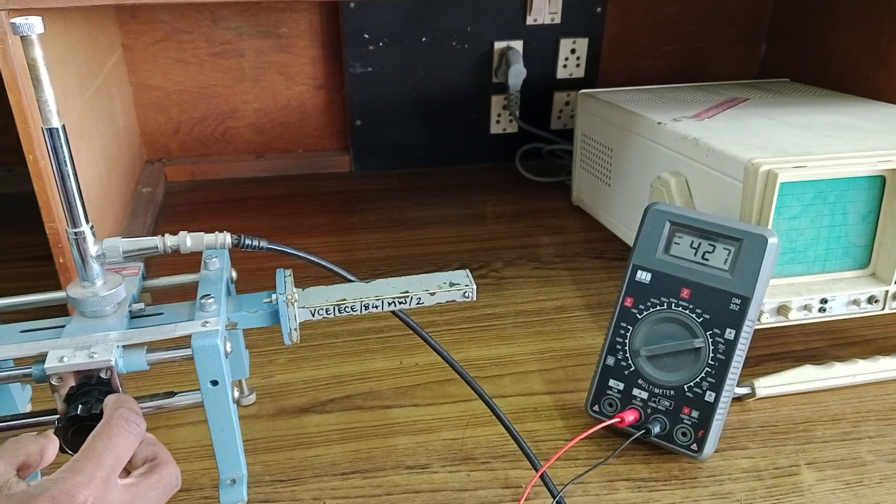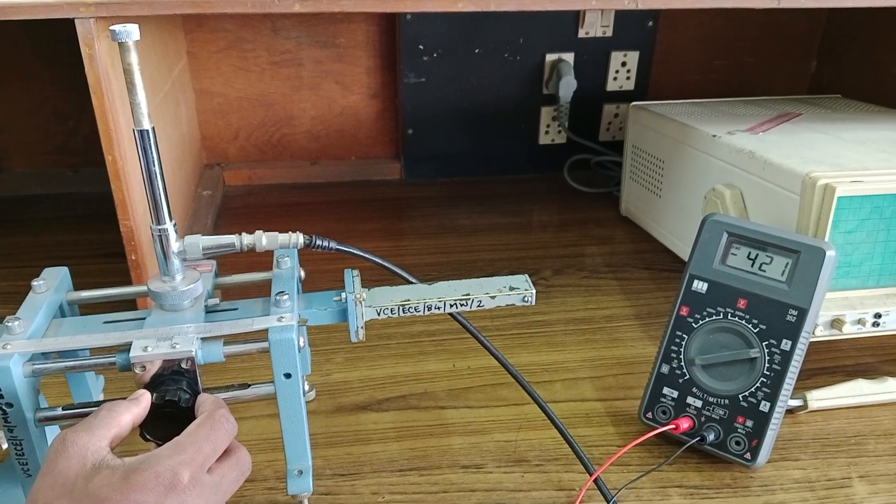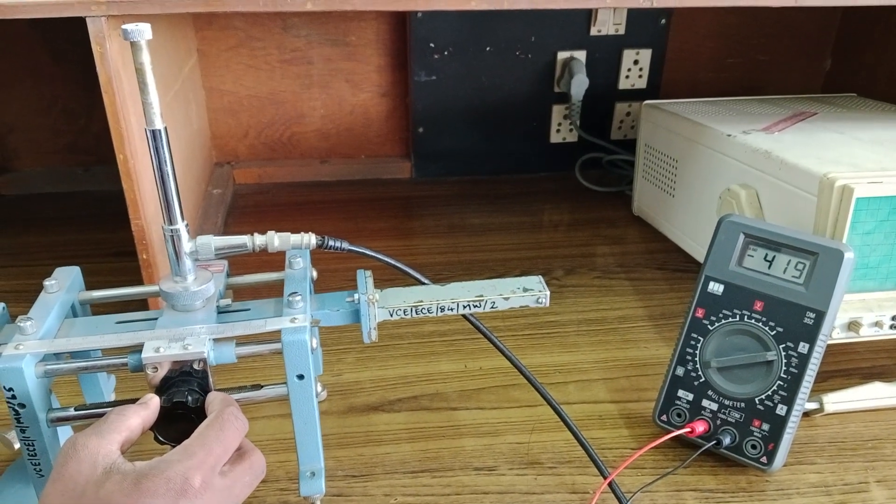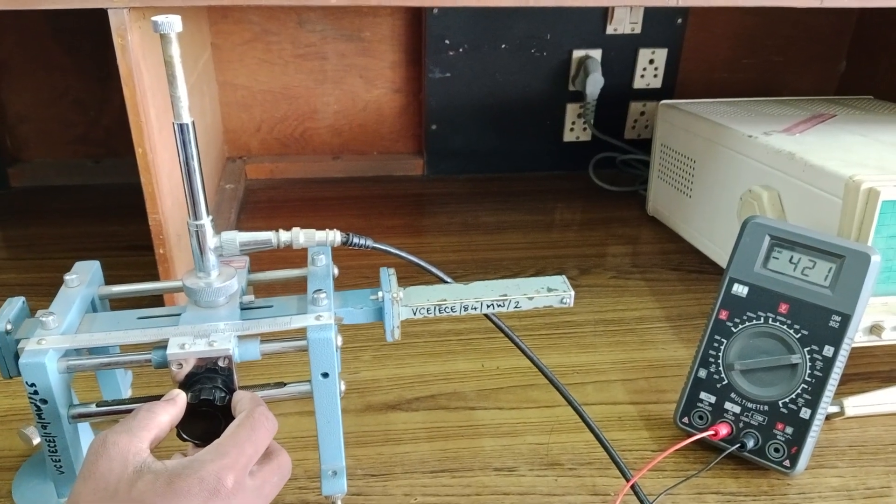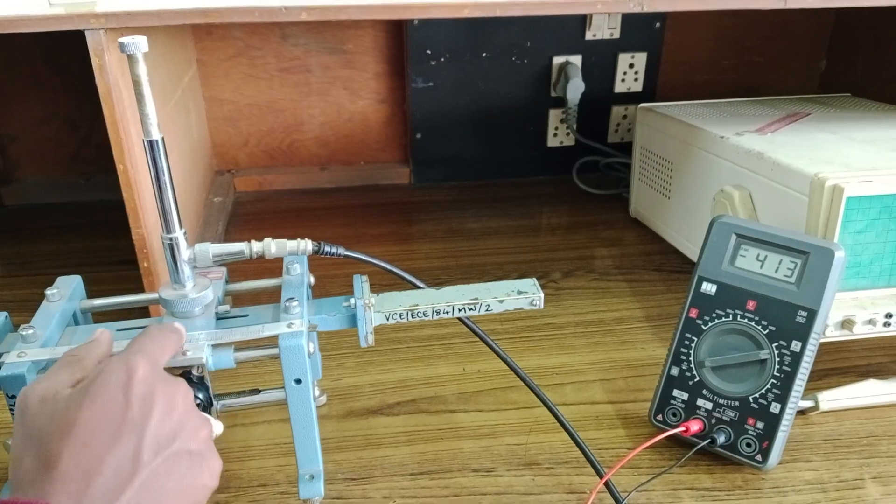So currently it is decreasing and it has suddenly risen up. So after 419, it started rising. So you have to stop at 419 and note down the distance again. This we call it as D2.